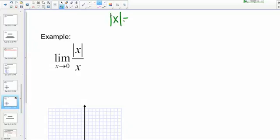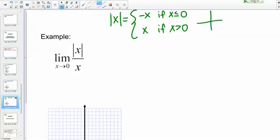The absolute value of X can be written as a piecewise function: negative X if X is less than or equal to 0, and X if X is greater than 0. Those pieces just represent the two sides of the V that you see on the absolute value function graph.